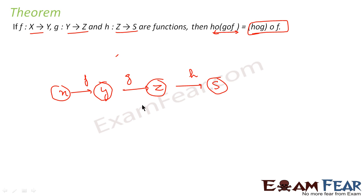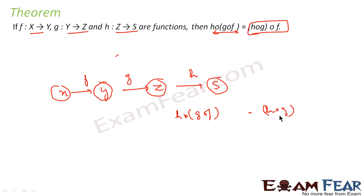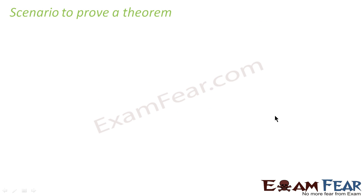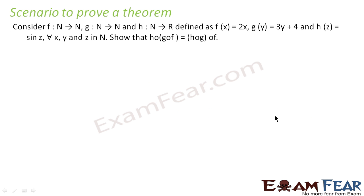There is a theorem, and we will take an example to prove this. That is, you take g∘f first and then take h of this, or you take h∘g and compose with f — both are the same. We will take one example to prove this.